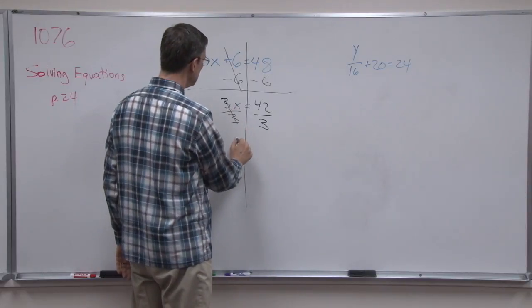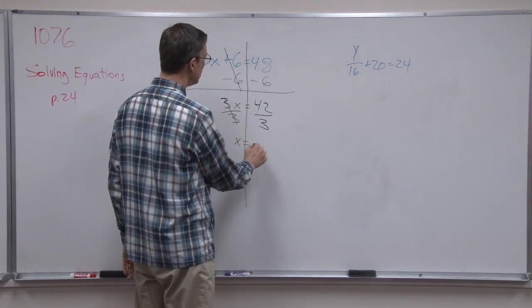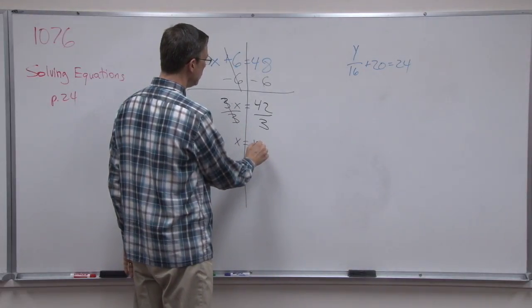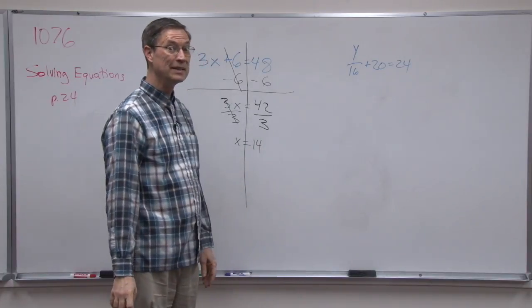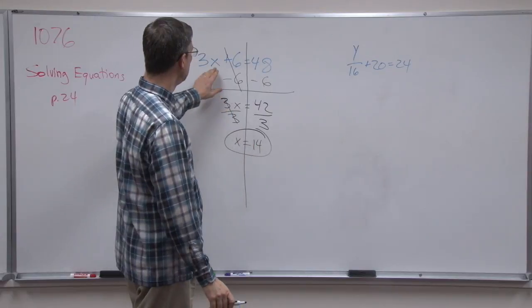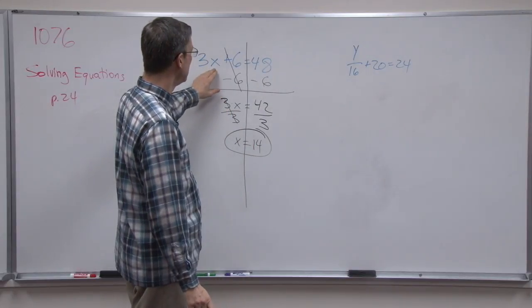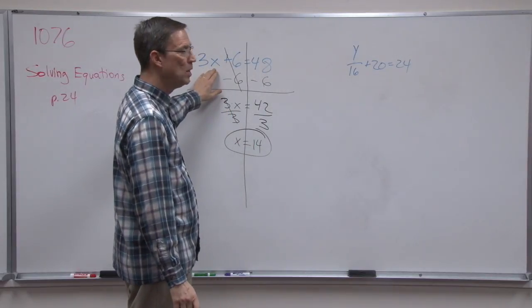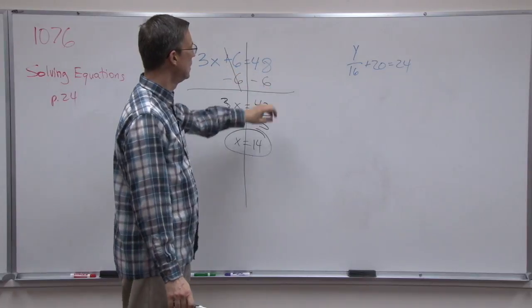So that cancels, x equals, and the answer is going to be 14, okay? And then it's a good idea to take that number back in and check it. Multiply 3 times 14, you get 42. 42 plus 6, sure enough, it's 48.